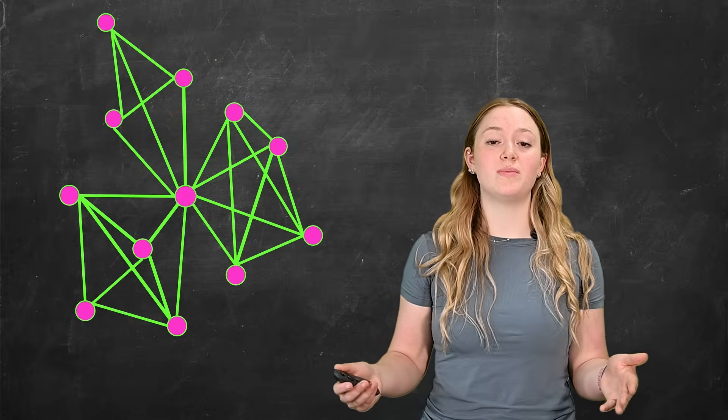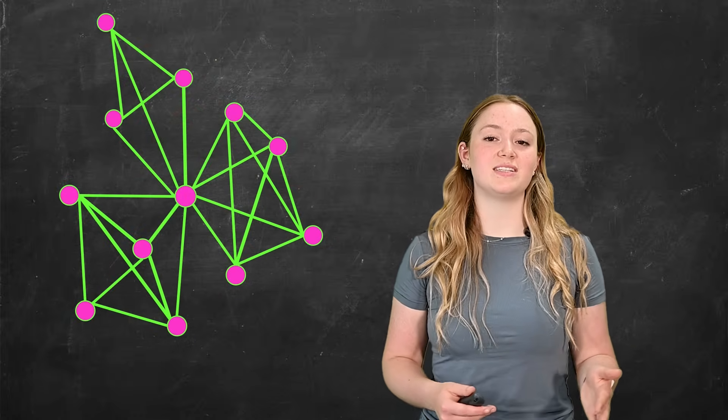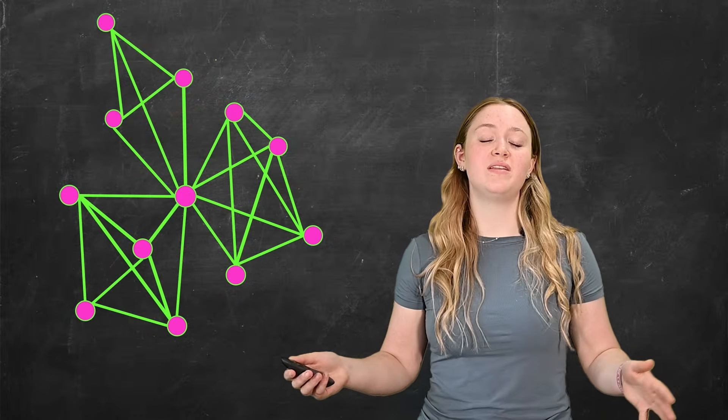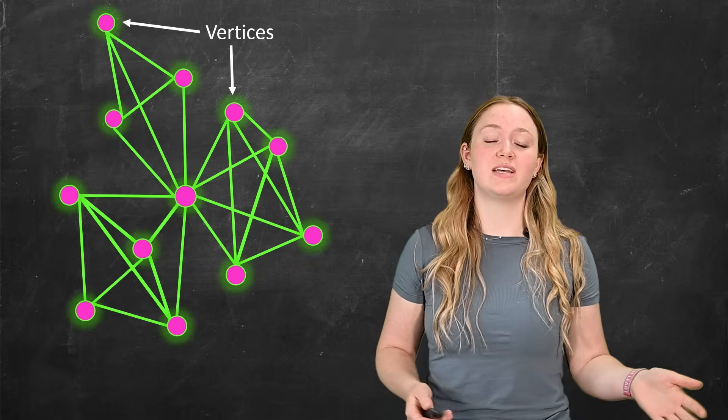There's one more thing that sets a small world graph apart. This is that it has a high clustering coefficient. The clustering coefficient measures how much vertices, or these, tend to cluster together.